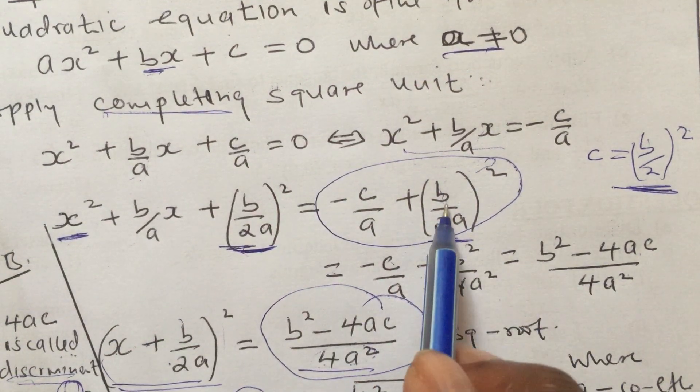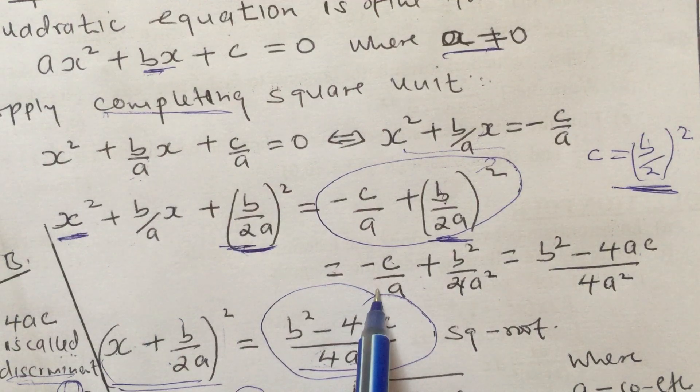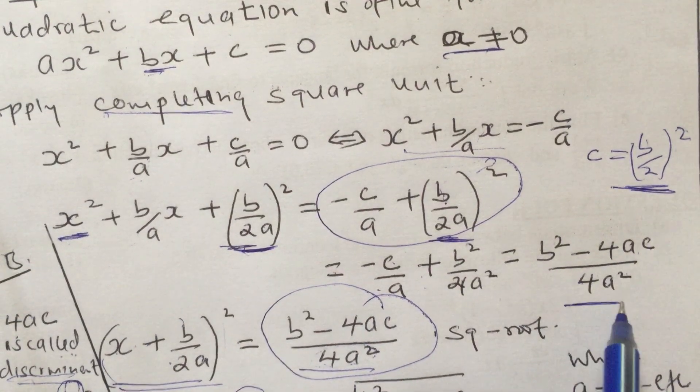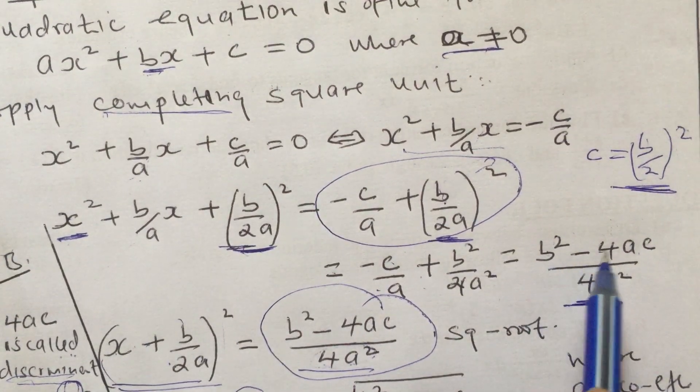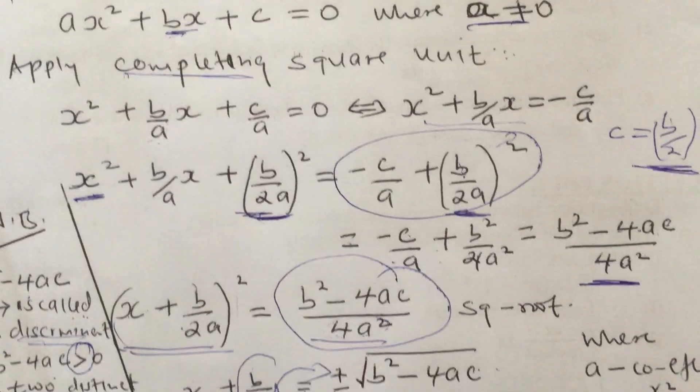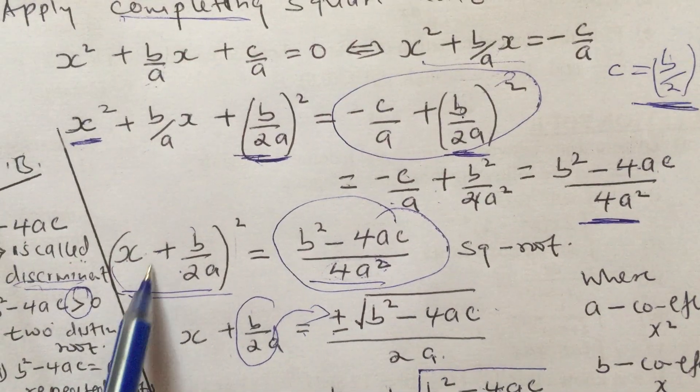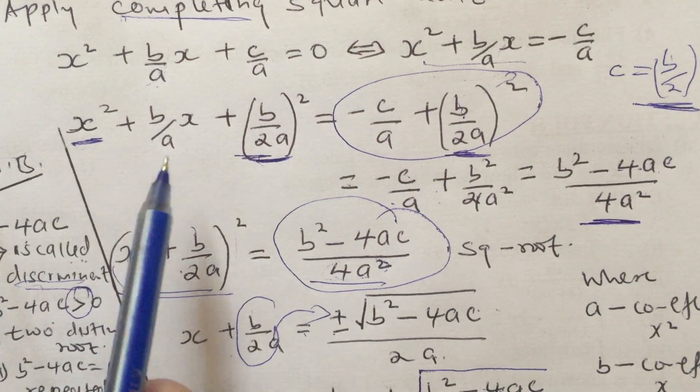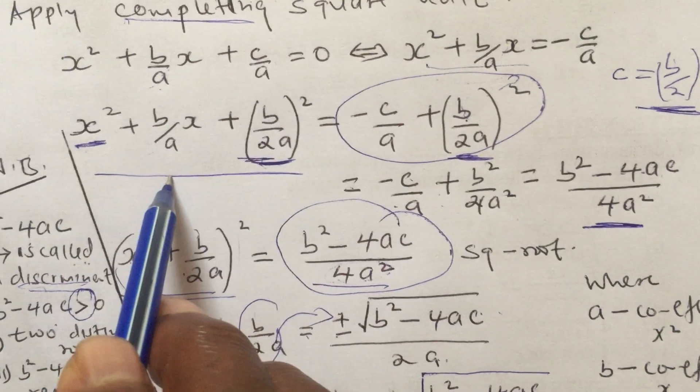Then simplify the right-hand side. By expanding and putting them together, we end up with (b² - 4ac)/(4a²).